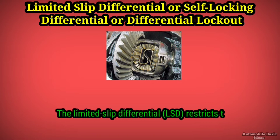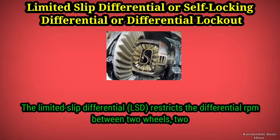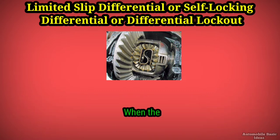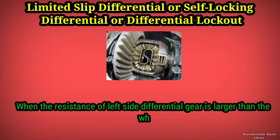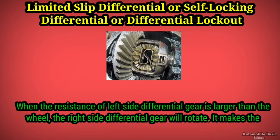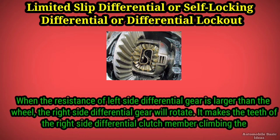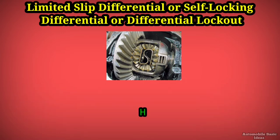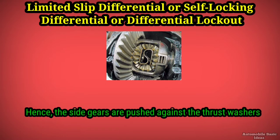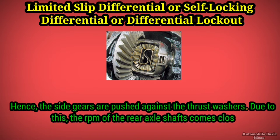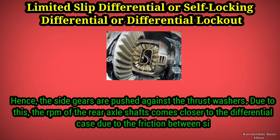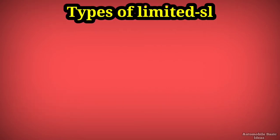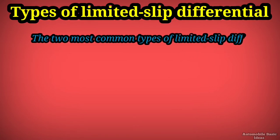The limited slip differential (LSD) restricts the differential RPM between two wheels. Two thrust washers and a clutch plate are incorporated in the differential case. When the resistance of the left side differential gear is larger, the right side differential gear rotates, making the teeth of the right side differential clutch member climb the teeth of the left side, pushing the two clutch members apart. The side gears are pushed against the thrust washers, bringing the RPM of the rear axle shafts closer to the differential case through friction. This is called the limited slip effect.